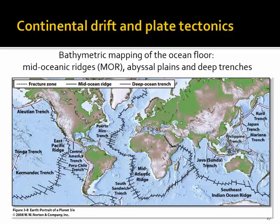We are seeing here a map that is the result of bathymetric mapping of the ocean floor. Bathymetric means the depth distribution of the ocean floor. The ocean floor has large areas that are fairly flat, without major topography. We see that also here in the Pacific Ocean. These we are calling the abyssal plains.